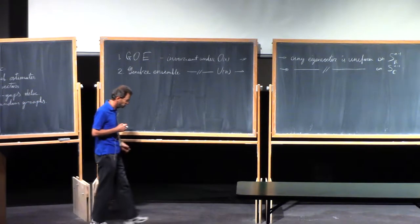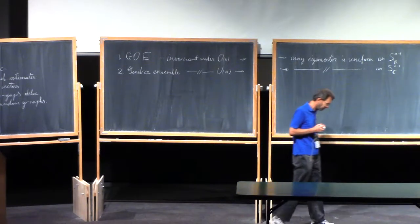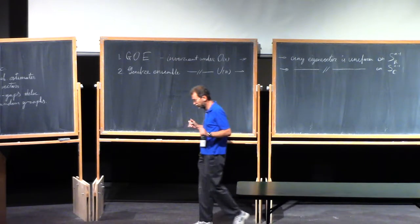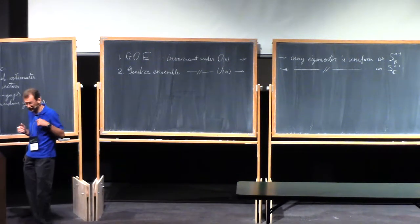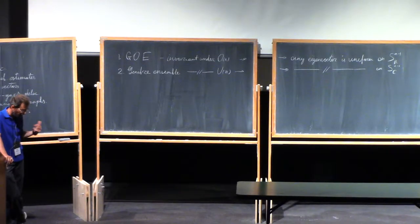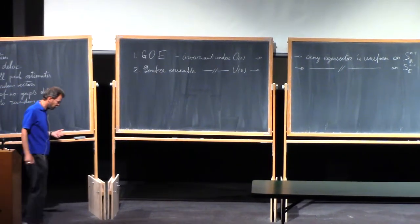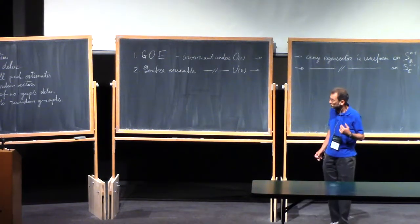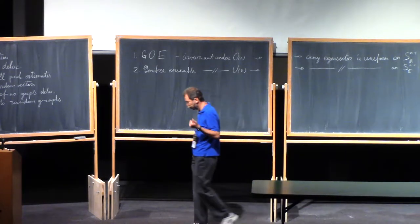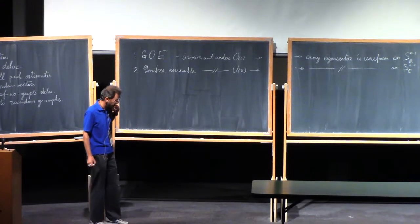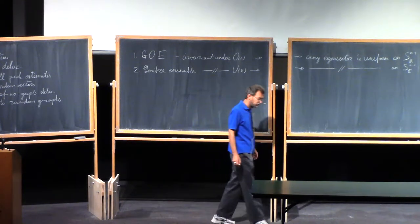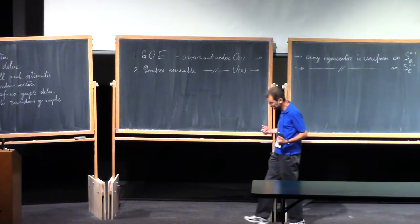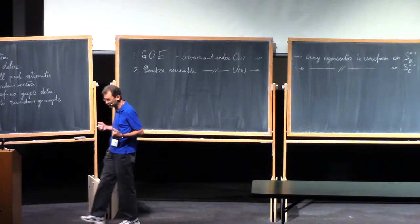There are many different ways to quantify this vague idea. For example, one can take a few coordinates of an eigenvector, and as the size of the matrix approaches infinity, the joint distribution of these coordinates will tend to the distribution of a standard Gaussian vector. This was proved by Bourgade and Yau in the case of random Hermitian matrices.